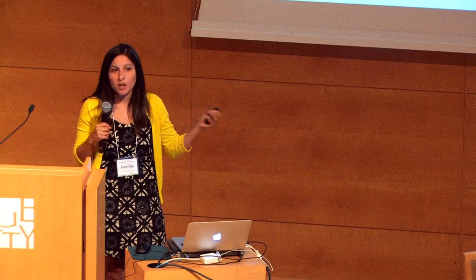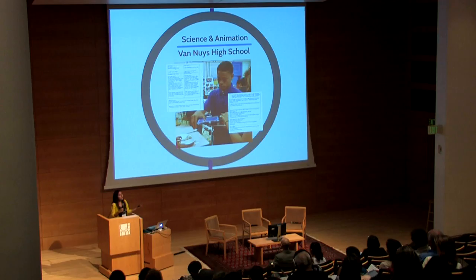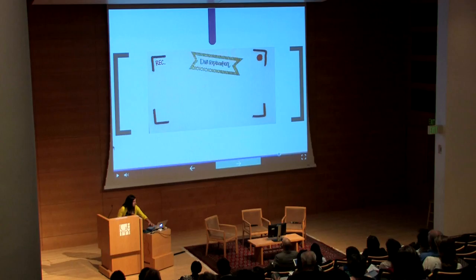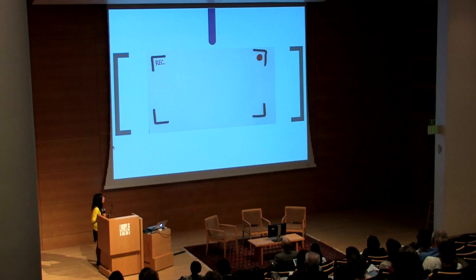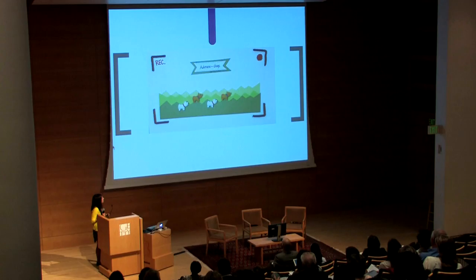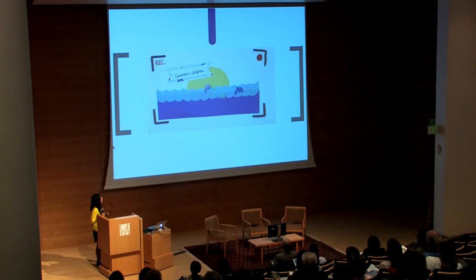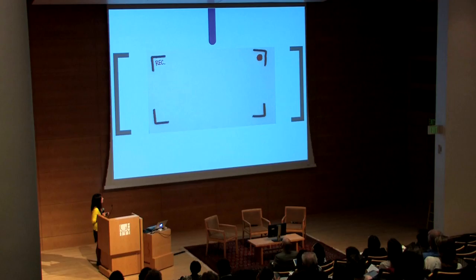And then science and animation: at Van Nuys High School, we worked with a biology teacher and an animation and film/video teaching artist. They were learning about DNA synthesis and multiplication. We came in and taught them about animation and the 13 steps to animation — squash and stretch, anticipation, overlapping action. They created storyboards and then also created actual stop-motion films that showed the process.